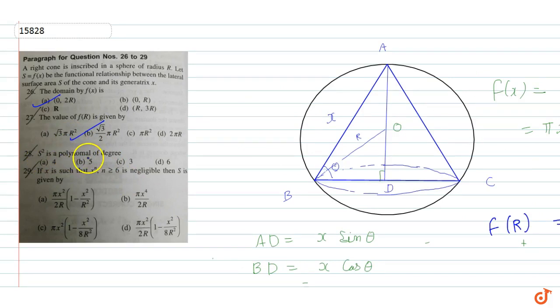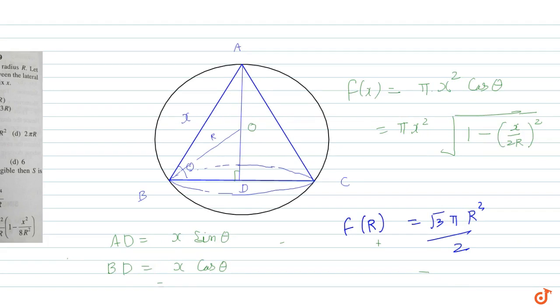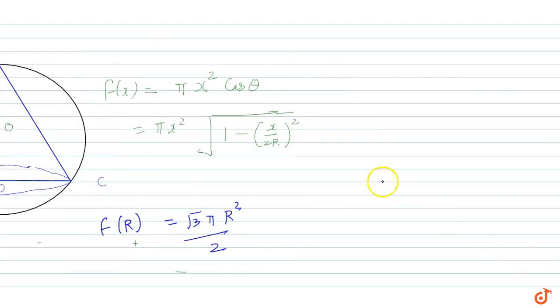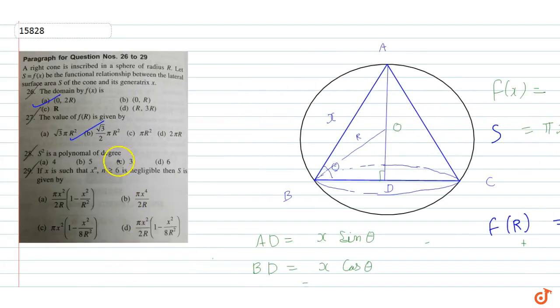Next, s square is a polynomial of degree what? If we square f(x), s square equals pi square x to the power 4 into 1 minus x square upon 4r square. The maximum power of x here is 6, so the degree is 6. The answer is option D.